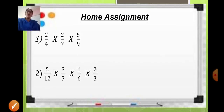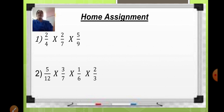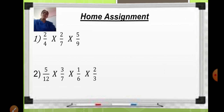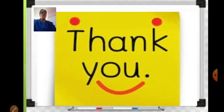Based on the topics we did today — multiplication of more than 2 fractions and properties of multiplication of fractions — there are 2 sums for your homework. First: 2 upon 4 multiplied by 2 upon 7 multiplied by 5 upon 9. Multiply all the numerators together, cancel the common factors, and then write the answer. Second: 5 upon 12 multiplied by 3 upon 7 multiplied by 1 upon 6 multiplied by 2 upon 3. Solve this in your homework. Meet you in the next class with a new topic. Practice all the sums — thank you for today and see you in the next class.